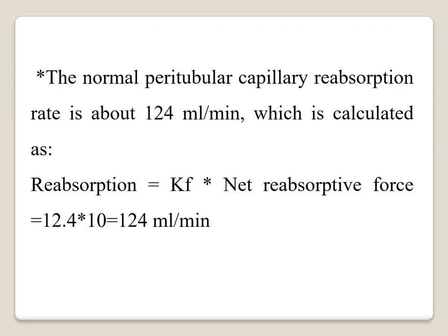The normal peritubular capillary reabsorptive rate is about 124 milliliters per minute, which is calculated as the filtration coefficient multiplied by the net reabsorptive force. The filtration coefficient equals 12.4, multiplied by 10 — the net reabsorptive force — giving 124 milliliters per minute. Recall that the glomerular filtration rate is 125 mL/min, and of that, 124 mL/min returns to the blood.